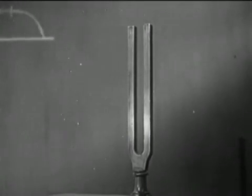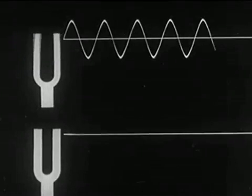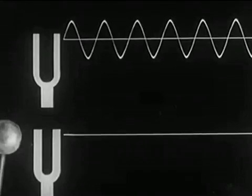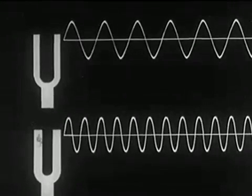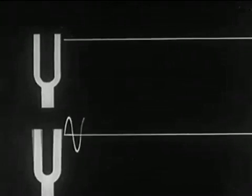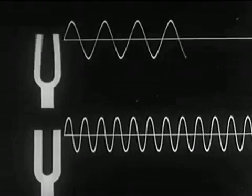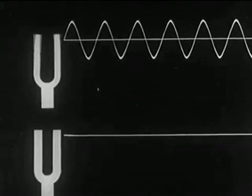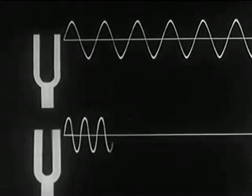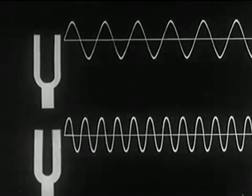What causes such differences in pitch? To explain such differences, we picture two different sound waves. Here the lower fork makes more complete vibrations per second. Therefore its frequency is greater. It is evident that the one with the greater frequency has the higher pitch.